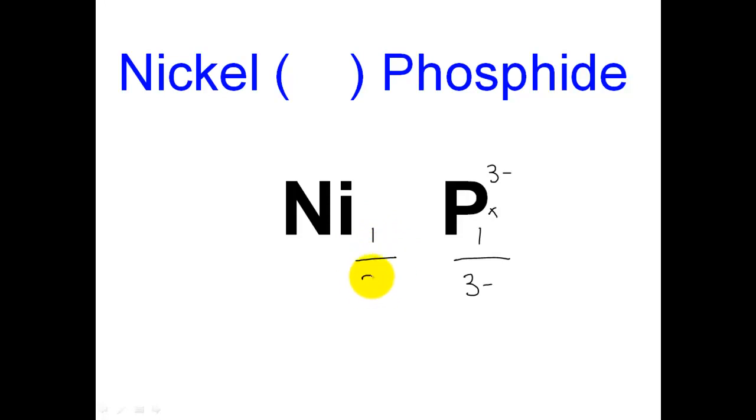Same way, over here, I need three plus. All right, what times one is going to give me a three plus? And once again, the answer here is three. And so nickel is a nickel three phosphide.